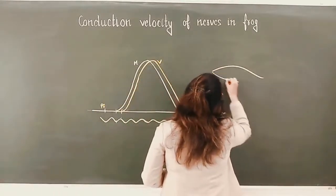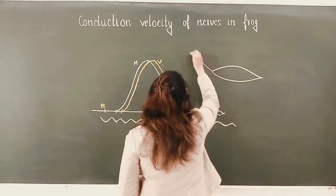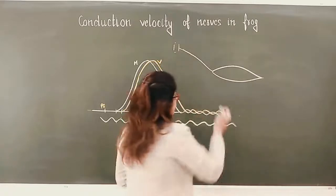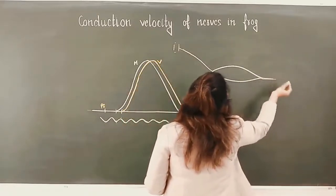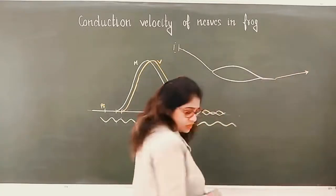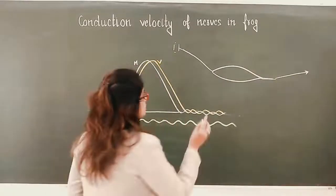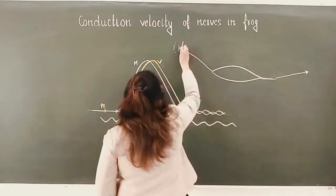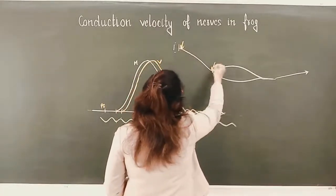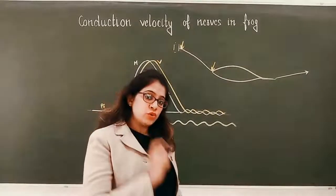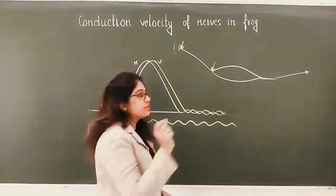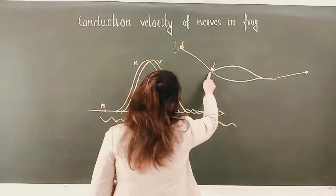Suppose this is the gastrocnemius muscle of the frog, this is the nerve, this is the vertebral end, this is the tendon, and this is the isotonic muscle lever. We are giving stimulus at two sites: one at the vertebral end of the nerve, and another at the muscular end of the nerve. So both stimuli are being given in the nerve itself, but the location is different—one is at the vertebral end, one is at the muscle end.